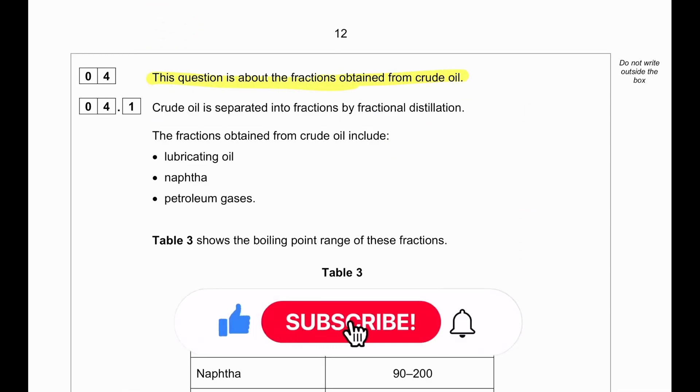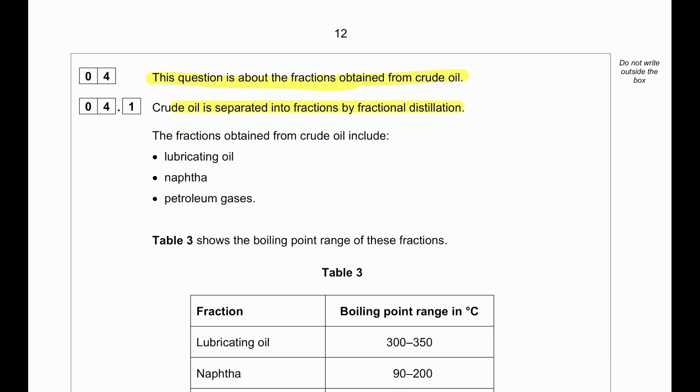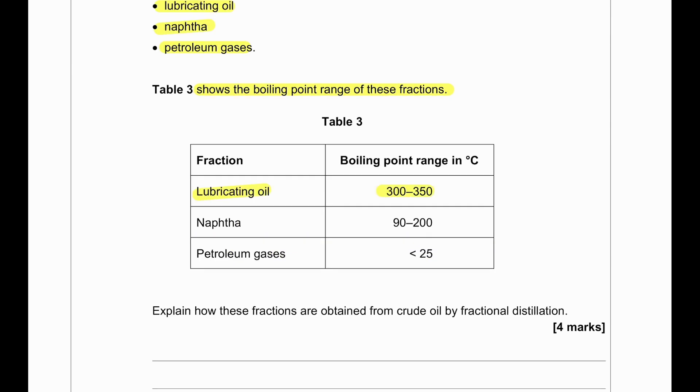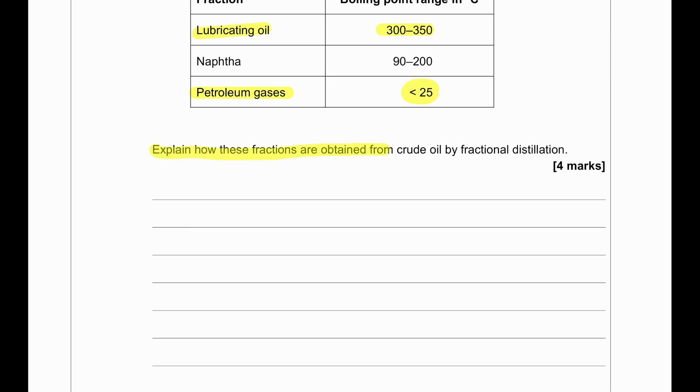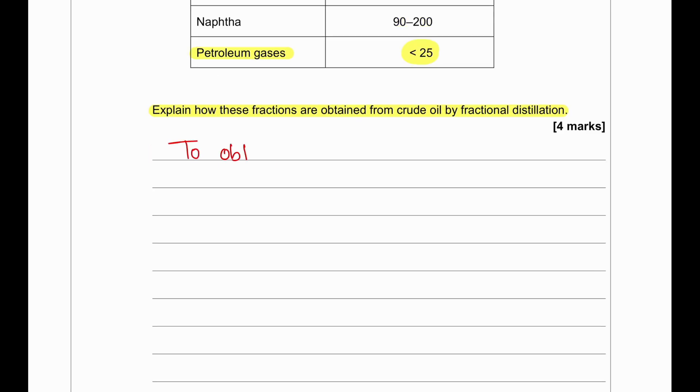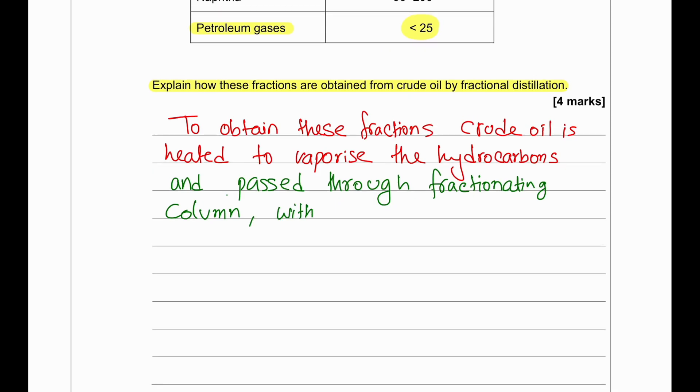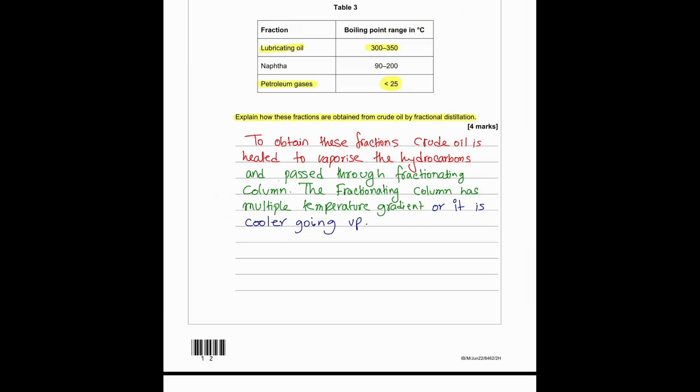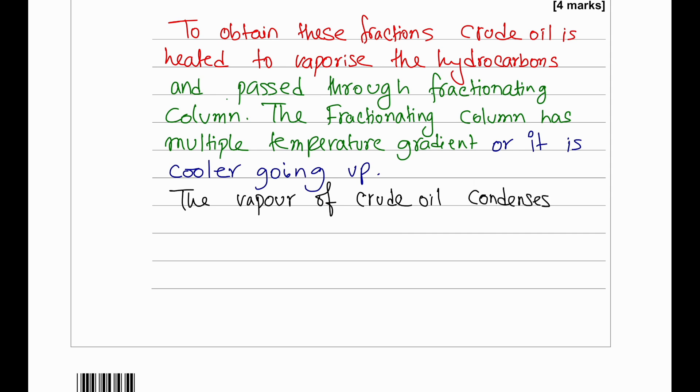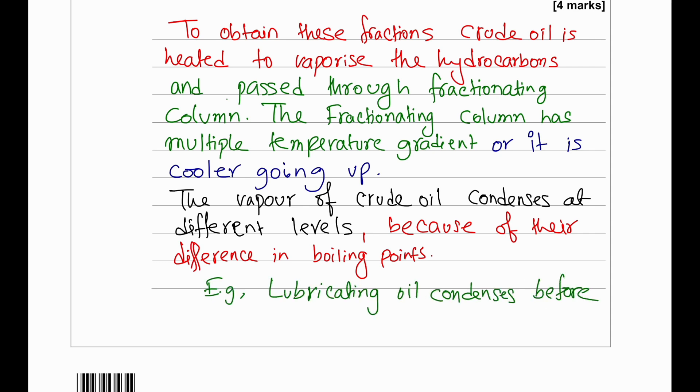This question is about the fractions obtained from crude oil. Crude oil is separated into fractions by fractional distillation. The fractions obtained from crude oil include lubricating oil, naphtha, and petroleum gases. Table 3 shows the boiling point range of these fractions. We can see that lubricating oil has the highest boiling point range and petroleum gases is lower than 25. Explain how these fractions are obtained from crude oil by fractional distillation. First, the crude oil is heated to vaporize all the hydrocarbons inside it. Once the vapor is produced, it is passed through a fractionating column. In the fractionating column there is a temperature gradient, so the gases condense at different levels. For example, lubricating oil has a high boiling point so it will condense way below the naphtha and petroleum gases. Petroleum gases having a low boiling point will be collected at the top. They are separated in the fractionating column due to their boiling point differences.